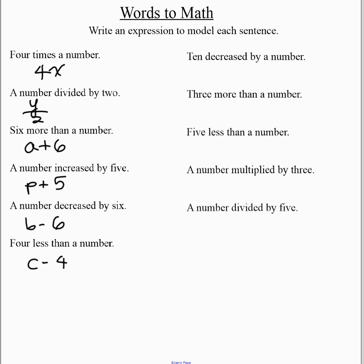But in math, four less than means to take the number and take four away from it. And so we have to write it in this order. Whereas up here, a plus six, I could have also written six plus a, and that would be the same. But c minus four is not the same as four minus c, so be careful.